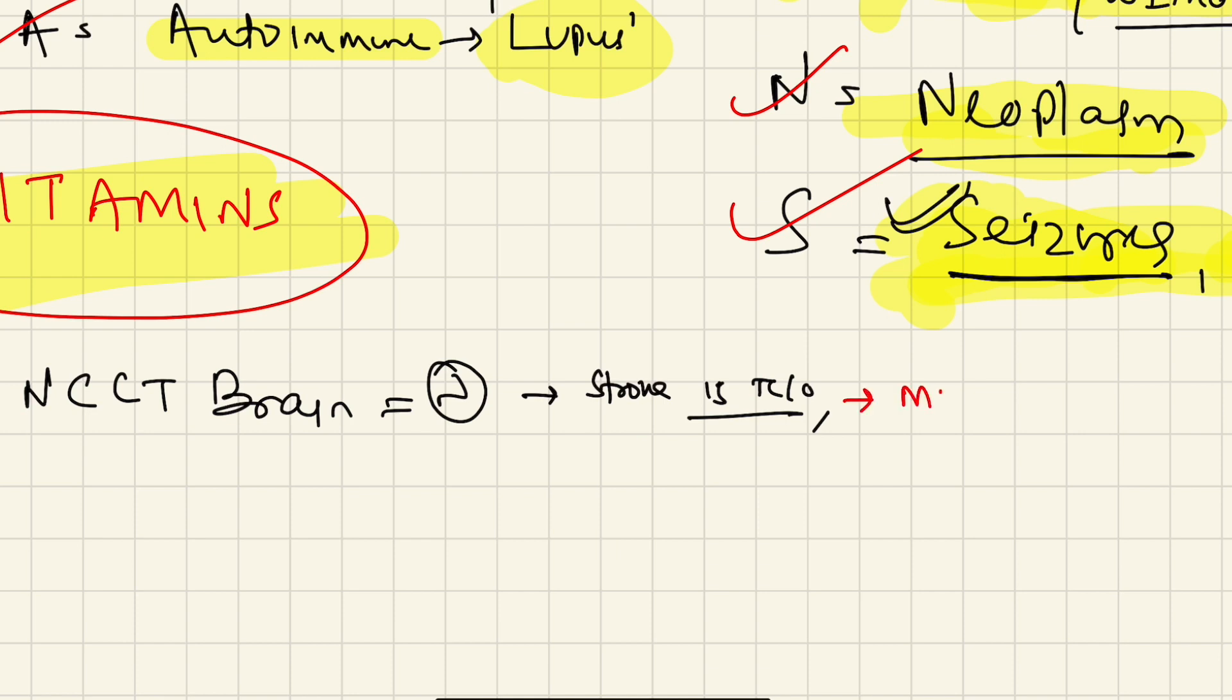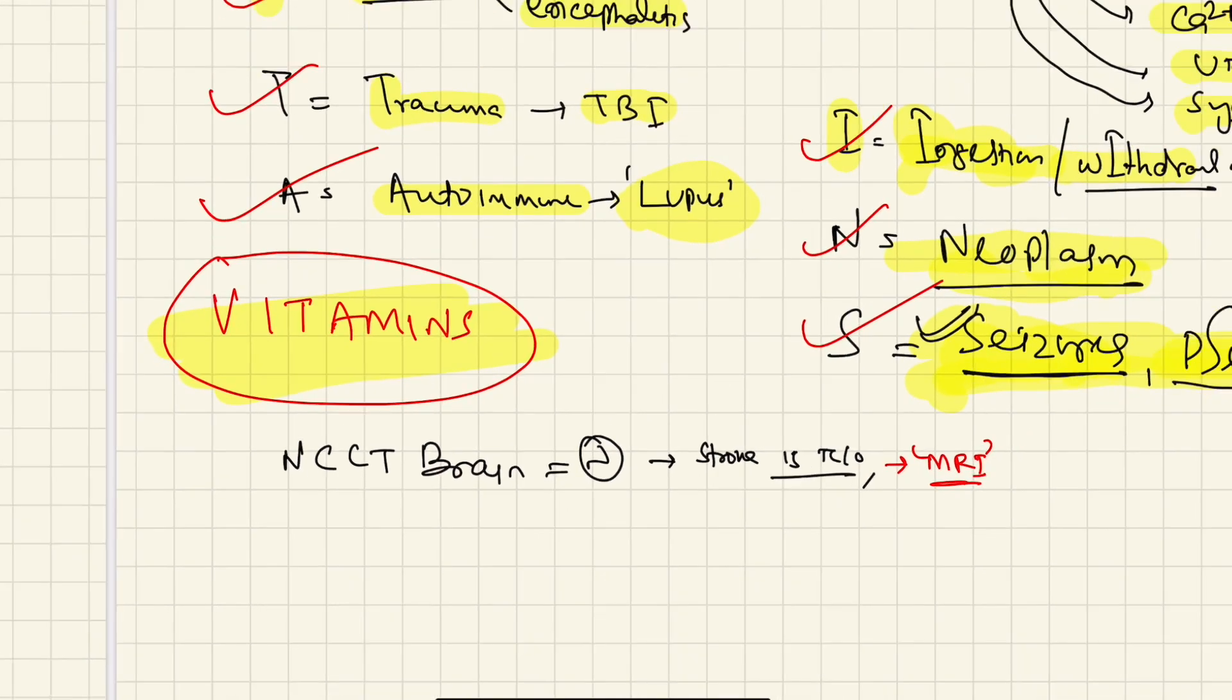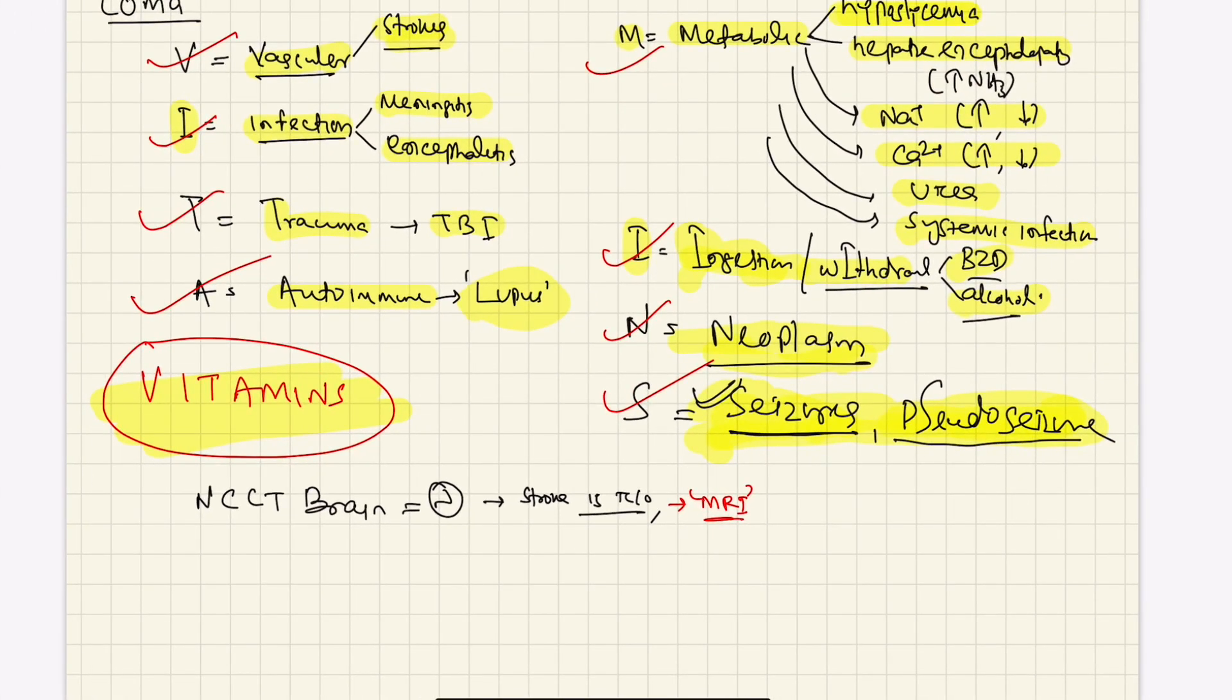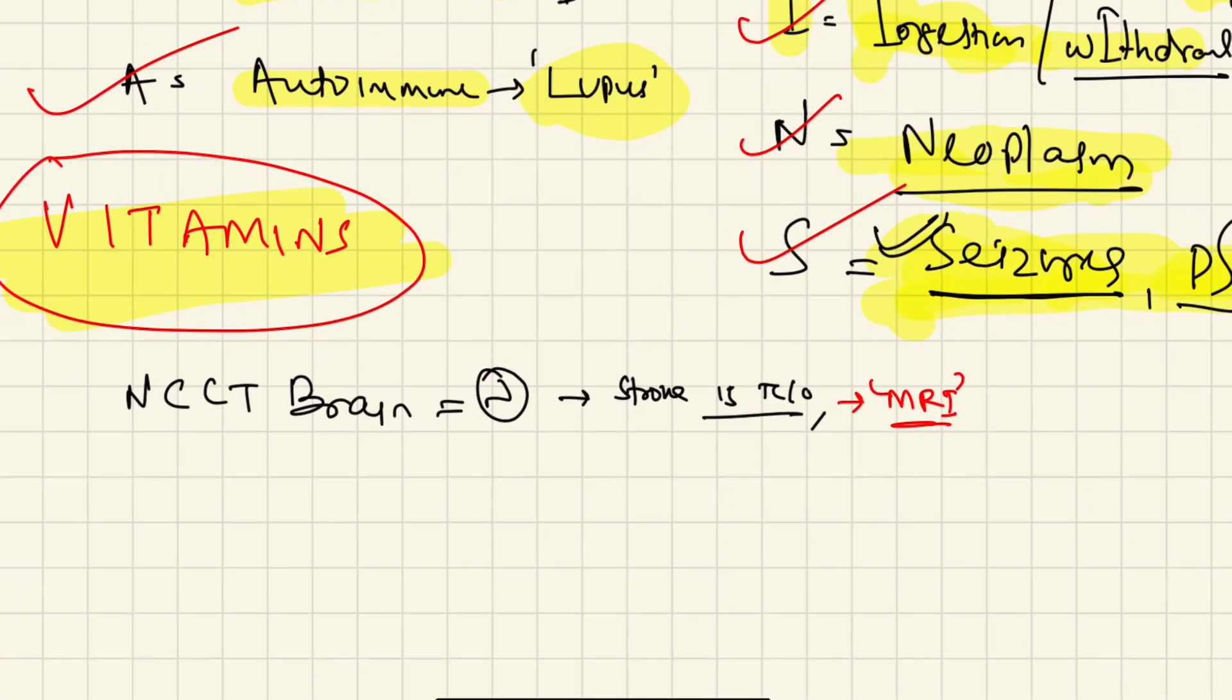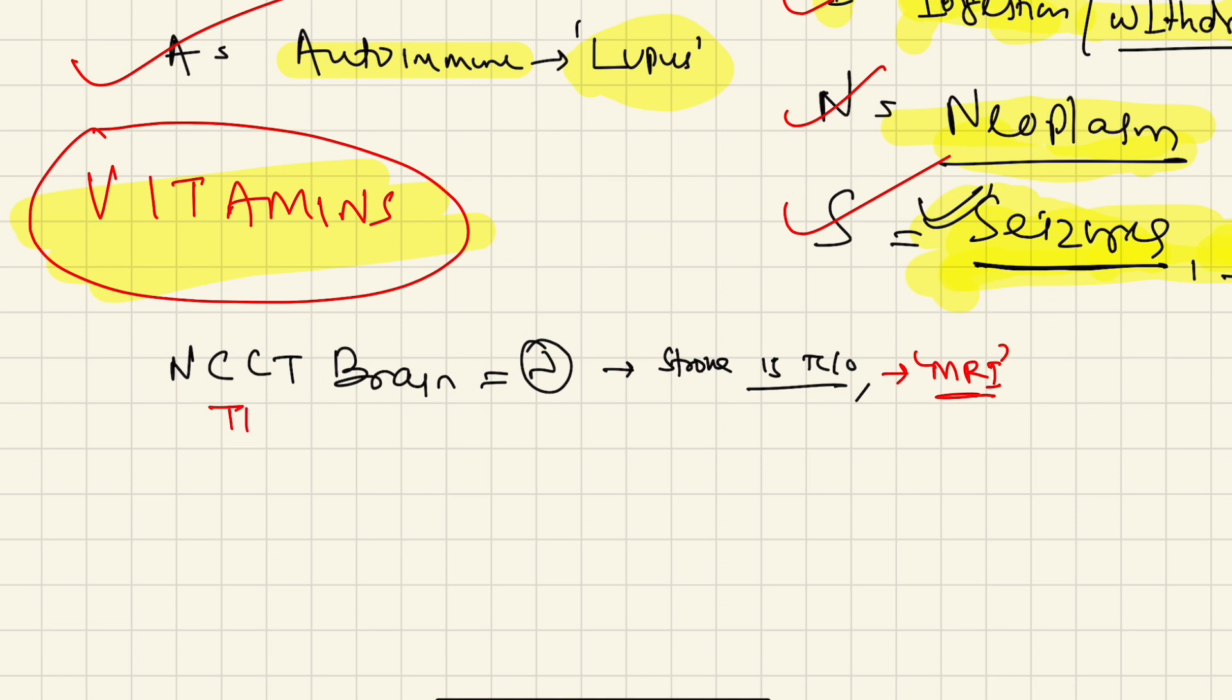Second thing is infection. Count is high in our case. TLC is high, but this can be due to stress. Any kind of stress can produce stress causing increase in TLC. But definitely we have to rule out CNS infection in this patient, so cultures and CSF studies would be done in this patient in near future.